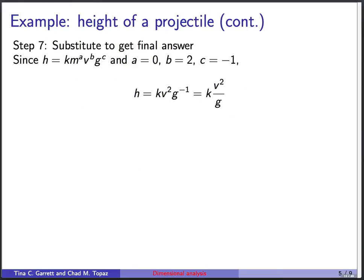Next, we just substitute to get the final answer. So here was the expression we had written down for h. We found a is zero, b is two, and c is minus one. So substituting, we have h equals k m to the zero, so that just goes away. And we have v squared, g to the minus one. Or we can write that as h equals k v squared over g.